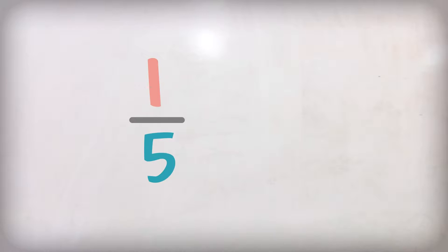When we put fractions in order, we look at the top number, which is the numerator, and the bottom number, which is the denominator.